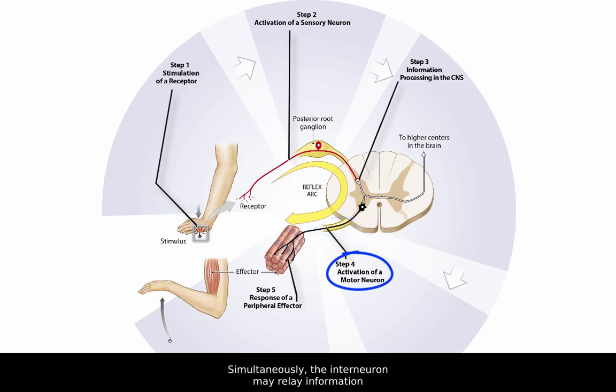Simultaneously, the interneuron may relay information such as pain to higher brain centers via axon collaterals.